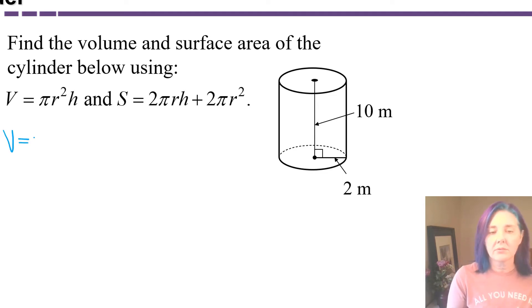The volume is going to be pi times r is 2. So we're going to have 2 squared times h is 10. So the volume is going to be 4 times 10, which is 40, and then times pi. And the units are given in cubic meters. When you're working with any object that circles in it, pi comes up a lot.